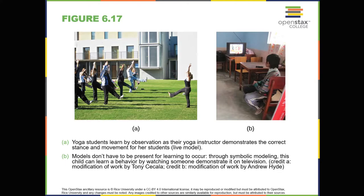For example, imagine that four-year-old Allison watched her older sister Caitlin playing in her mother's makeup, and then saw Caitlin get a timeout when her mother came in. After their mother left the room, Allison was tempted to play in the makeup, but she didn't want to get a timeout from her mother. Once you actually demonstrate the new behavior, the reinforcement you receive plays a part in whether or not you'll repeat the behavior.